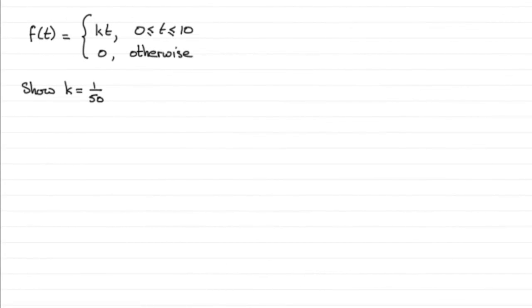For this first part of the question, we're given that the length of the telephone call made to a company is denoted by the continuous random variable t, and it's modeled by this probability density function here.